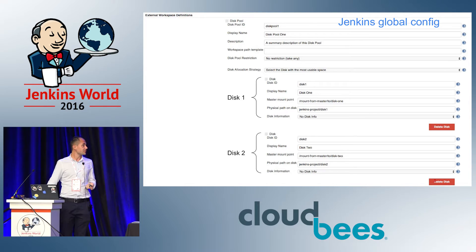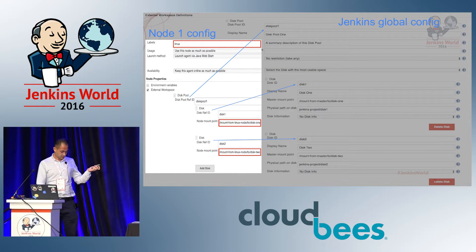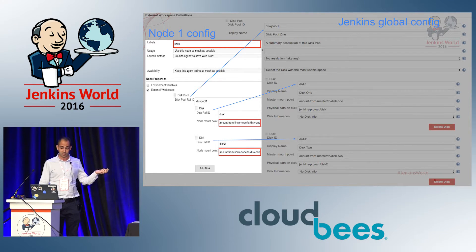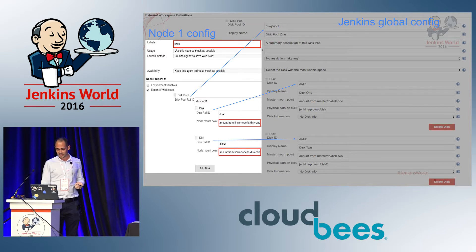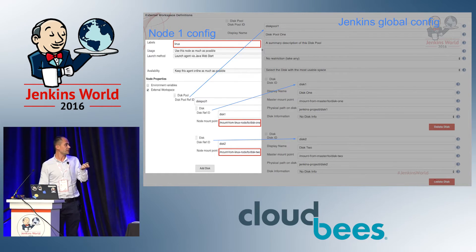Now let's have a look at the node configs. On the left we have a node 1 config, labeled Linux. In the External Workspace node properties, we need to reference the disk pool ID from the Jenkins global config, and we need to reference the disk IDs. For each disk entry, we need to specify the node mount point — this is the mounting point from the node to the disk.